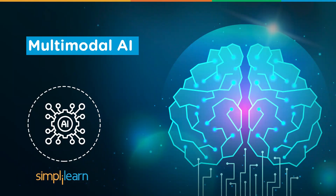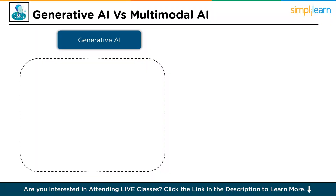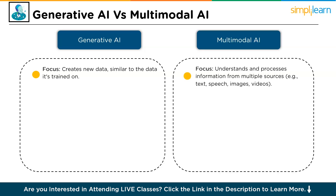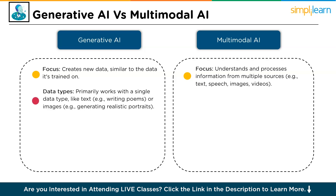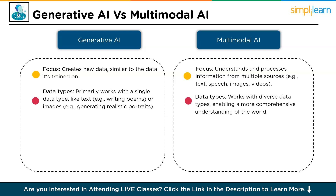Now let's understand the difference between multimodal AI and generative AI. While both have exciting advancements in AI, they differ in their approach to data and functionality. Generative AI focuses on creating new data similar to the data it's trained on. Multimodal AI focuses on understanding and processing information from multiple sources — that is, text, speech, images and videos. In terms of data types, generative AI primarily works with a single data type like text — writing poems — or images, such as generating realistic portraits. Whereas multimodal AI works with diverse data types, enabling a more comprehensive understanding of the world.